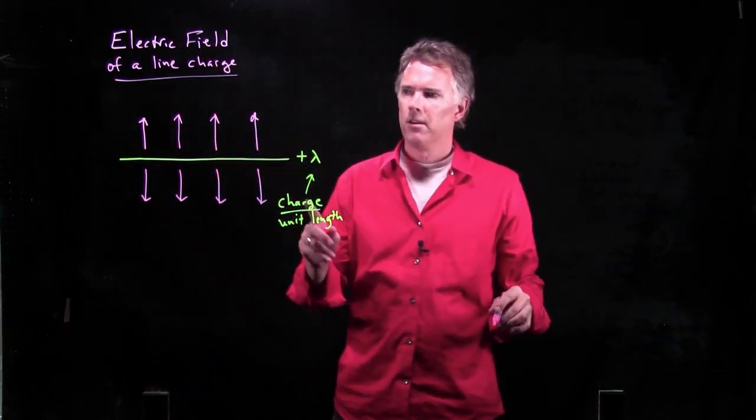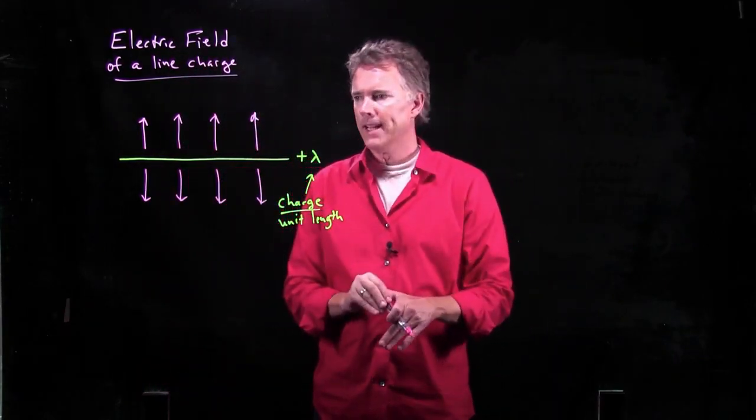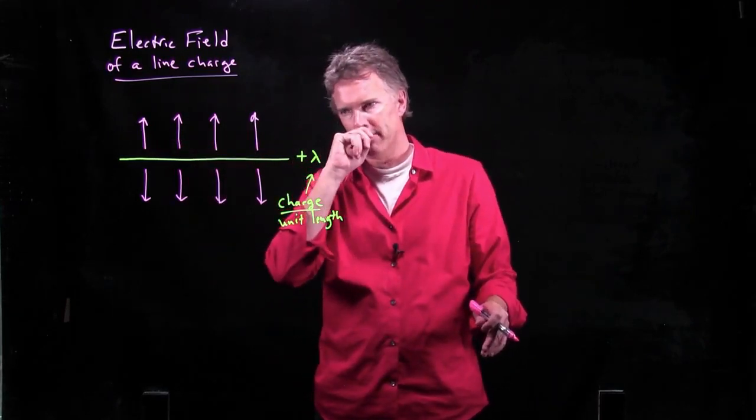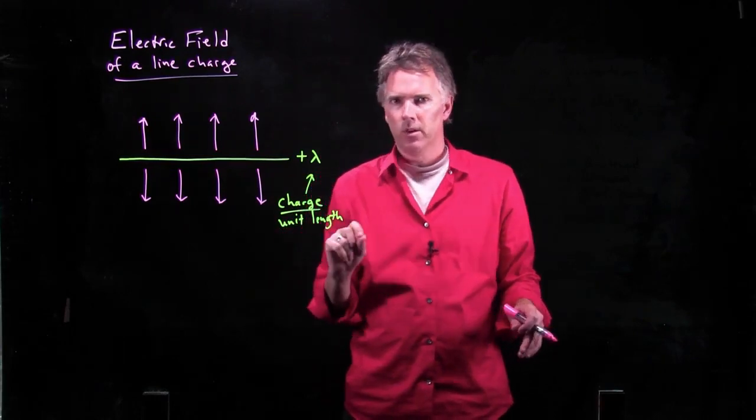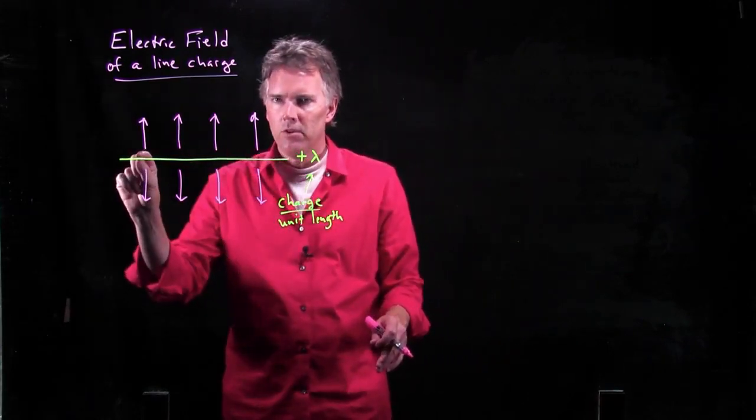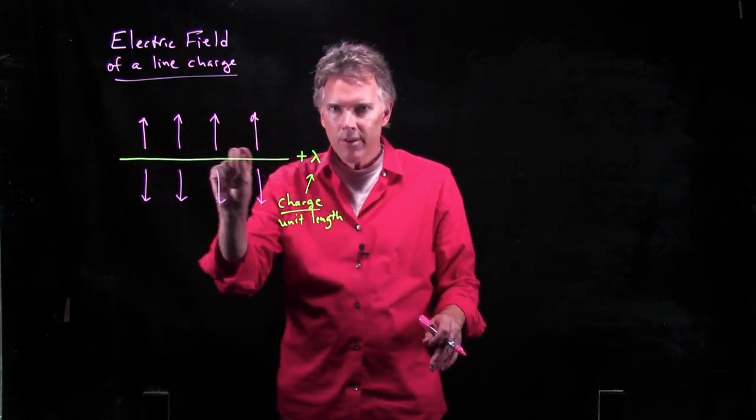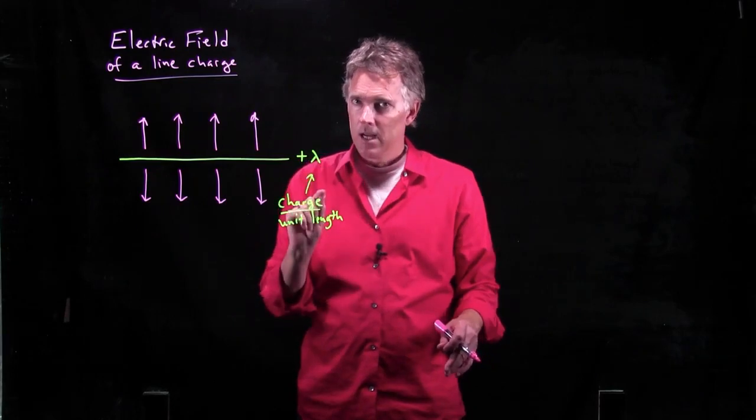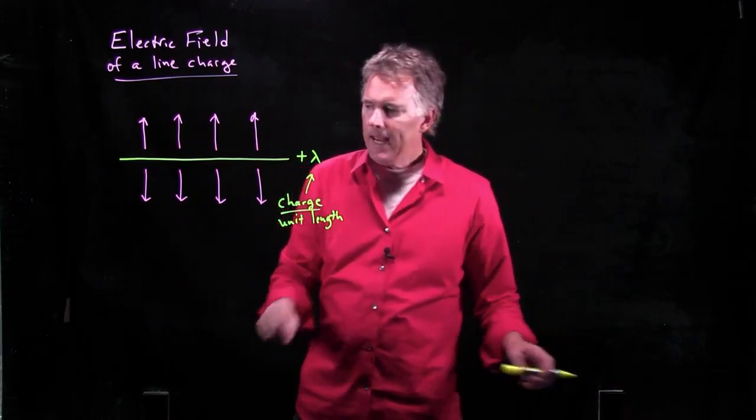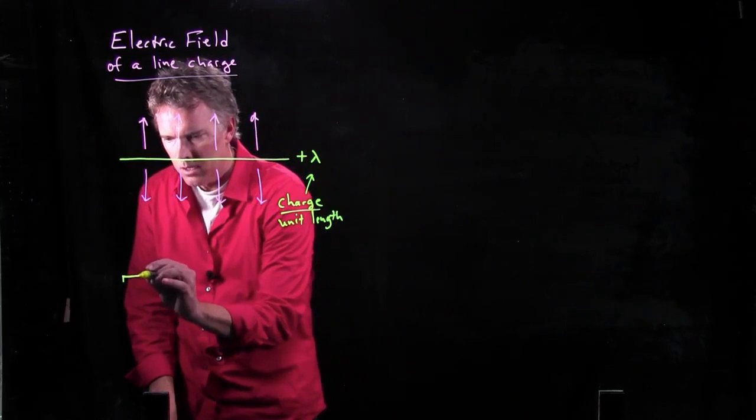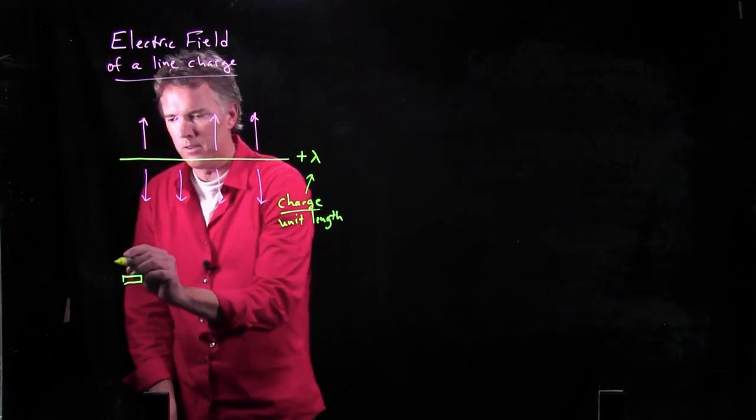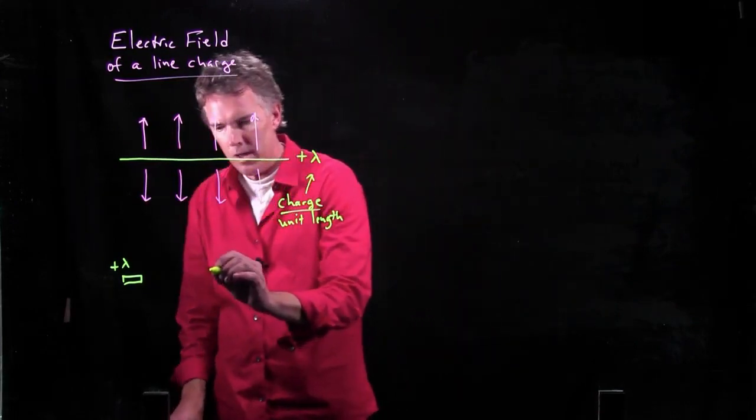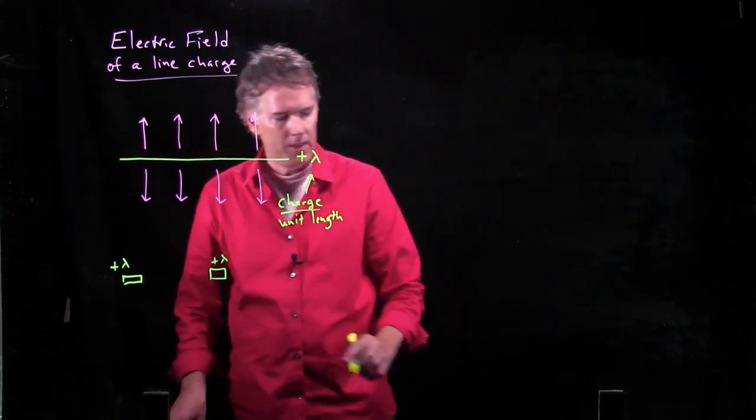And now you might ask yourself, why is it going perfectly radially outward from this line charge? How come it's not pointing to the right or the left? And the answer is a little bit subtle. It has to be an infinitely long line of charge. If it is an infinitely long line of charge, then any region of that plus lambda will have a mirror image of another plus lambda over on the other side.